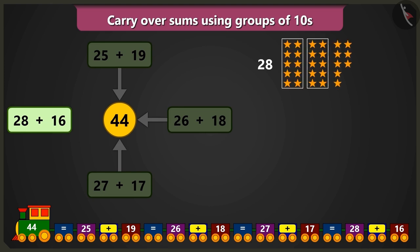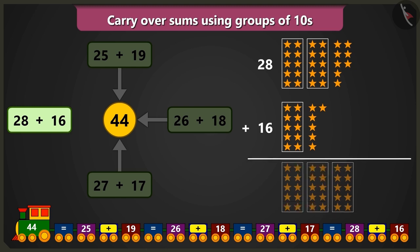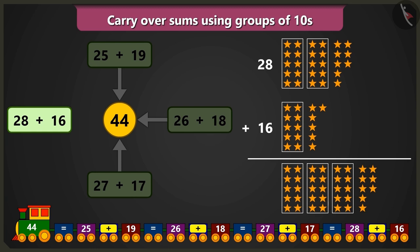28, that is 2 tens and 8 ones. Now we will add 8 ones to 6 ones. So count after 8: 9, 10, 11, 12, 13, and 14. Yes, so here also there are 14, which means 1 ten and 4 ones.